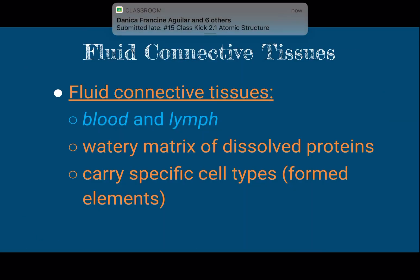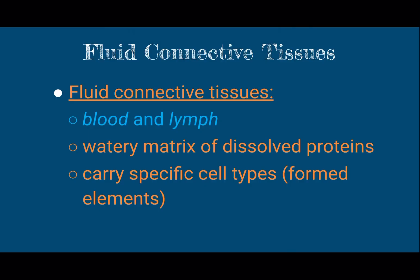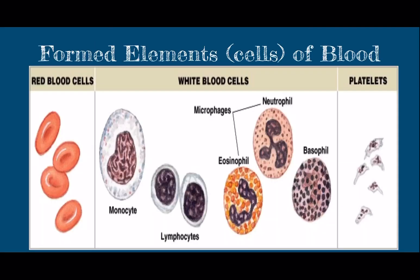We're going to talk a little bit about fluid connective tissue now — just a minute on blood and lymph. Blood obviously has a very liquid matrix and then it has what are called formed elements; the formed elements are cells. Red blood cells, white blood cells, and platelets are the types of things you see in the formed elements in the blood, plus a very watery matrix. Platelets are not actually cells — they're just pieces of cells — but they are also present in blood.